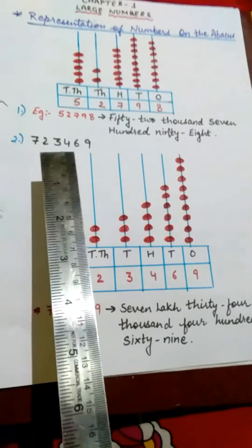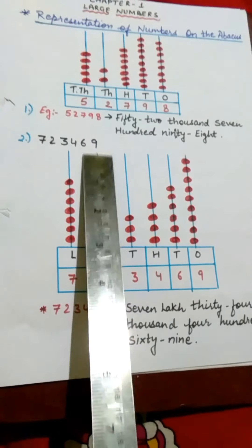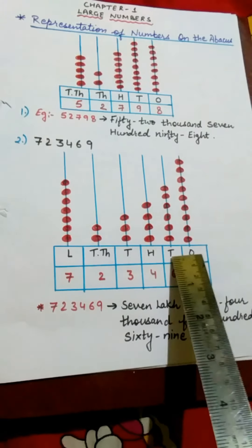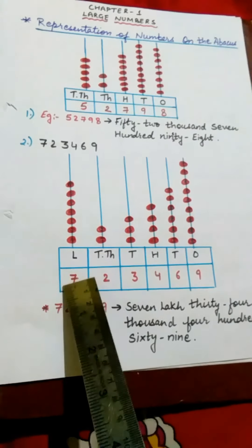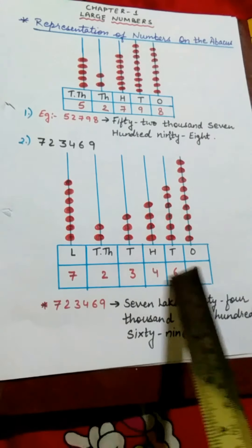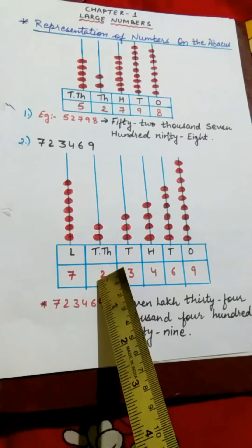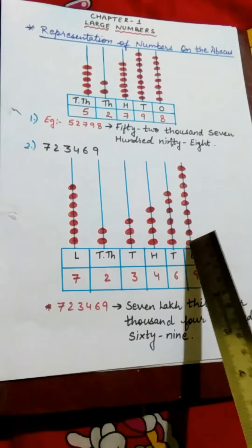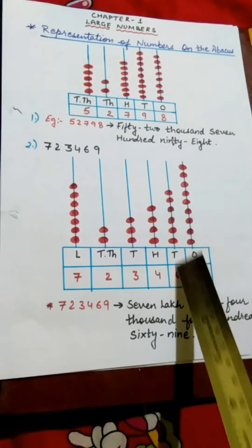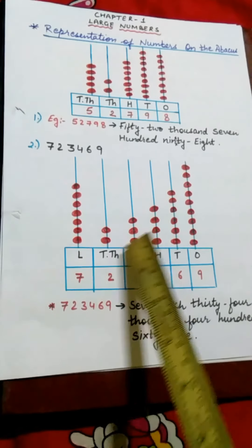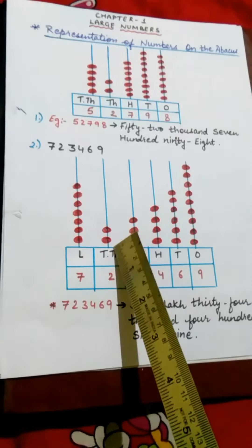Similarly, you can see this next example. You have to represent this number on the abacus. You will draw an abacus and write the place value chart from 1s, 10s, 100s, 1000s, 10,000s, and Lakhs. Then you will start filling the number from right to left: 9, 6, 4, 3, 2, and 7. You will put 9 beads in the 1s place, 6 beads in the 10s place, 4 beads in the 100s place, 3 beads in the 1000s place, 2 beads in the 10,000s place, and 7 beads in the Lakhs place. This is how you represent a number on the abacus.